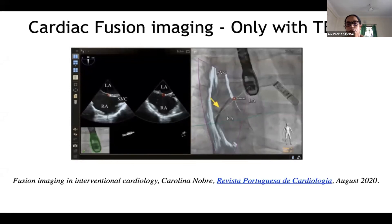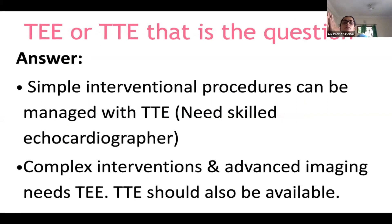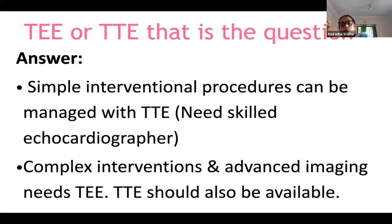In summary, most intervention procedures can be managed with trans thoracic echo provided a skilled echocardiographer is available and the patient's acoustics are good. However, complex interventions involving posterior structures — such as paravalvular leak closure, MitraClip, and left atrial appendage closure — and those requiring advanced imaging techniques need trans esophageal echo. Even in all cases where trans esophageal echo is used, trans thoracic echo should be available as a backup.